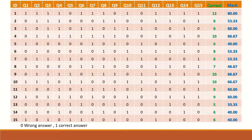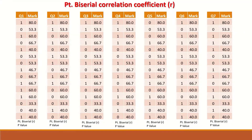Once the total mark is calculated, the test correlates each specific question's scores with the total mark. To calculate R, the coefficient, for each question, take the question's values — scored 0 or 1 — and correlate them with the total mark for all students. This is done for every question to generate a specific R value and p-value for each item.